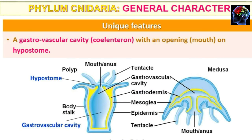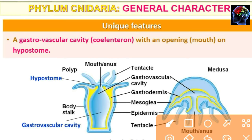Another unique feature is the gastrovascular cavity. It is a gastrovascular cavity with an opening called the hypostome, which serves as the mouth. This is an important unique feature of Phylum Cnidaria.